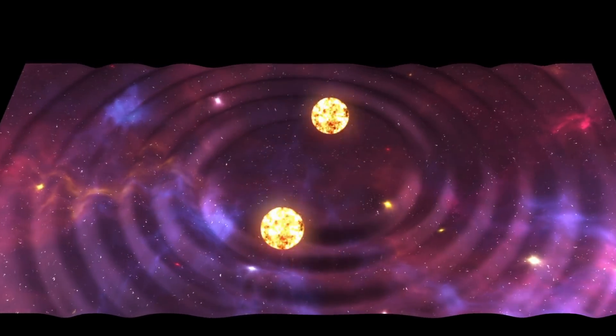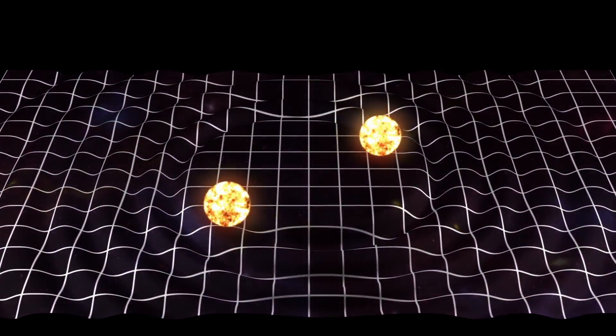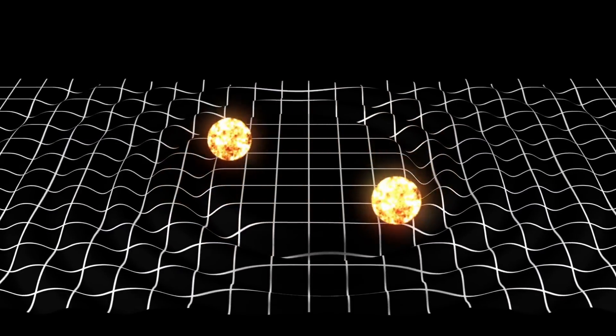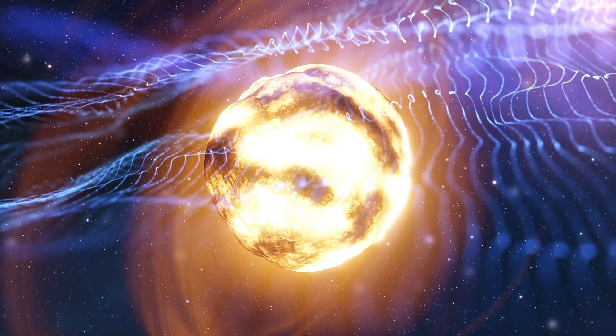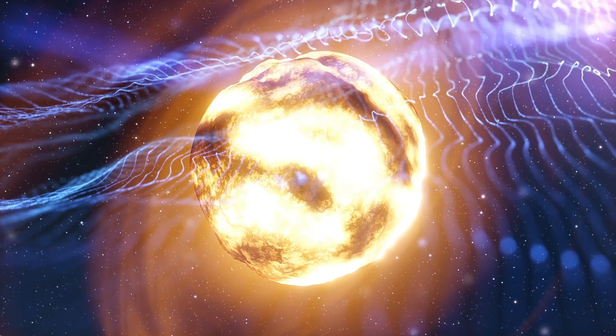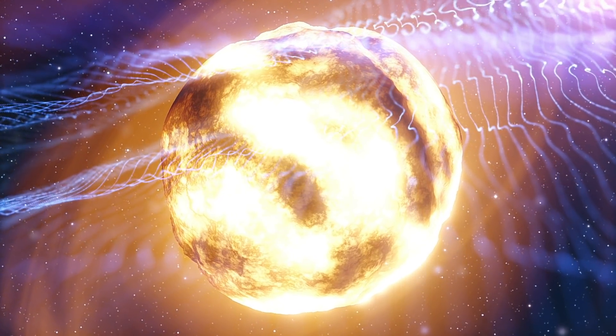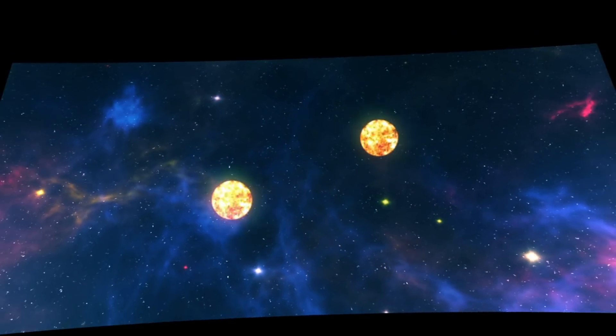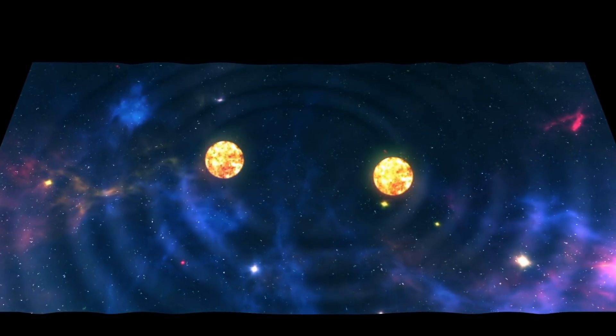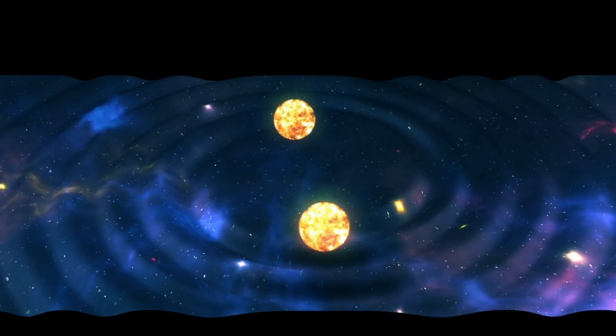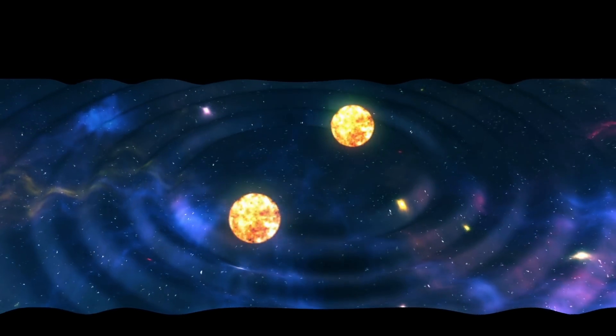As objects with mass move around in space-time, the curvature changes to reflect the changed locations of those objects. What Einstein's theory predicted was that mass curves space and time, so that means if you've got masses that move and violent things that happen, you can get ripples in space and time that move out just like ripples on a pond if you throw a stone.